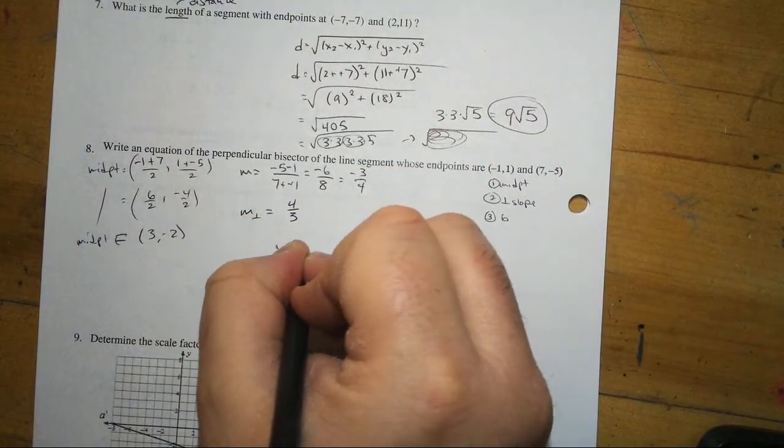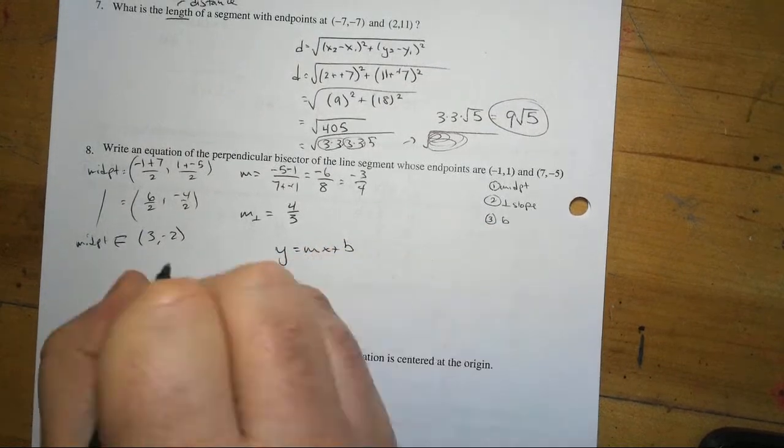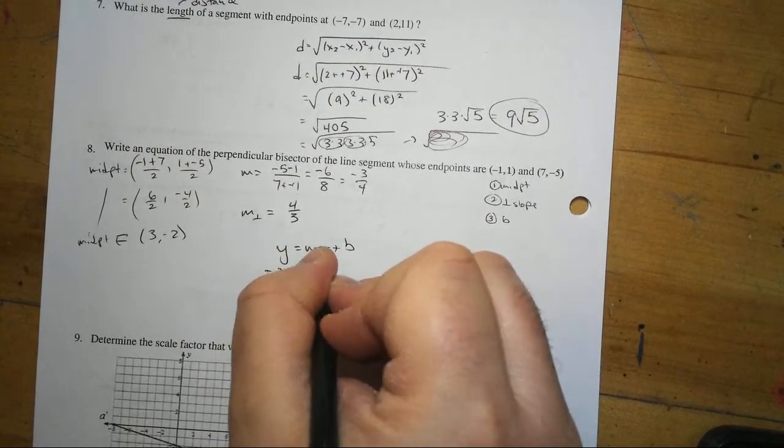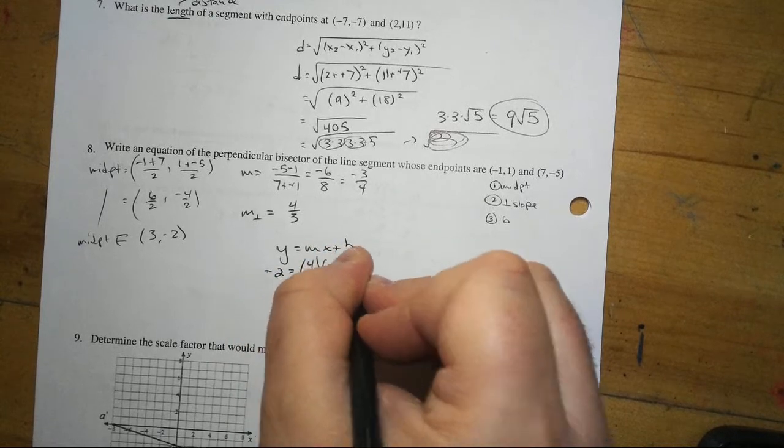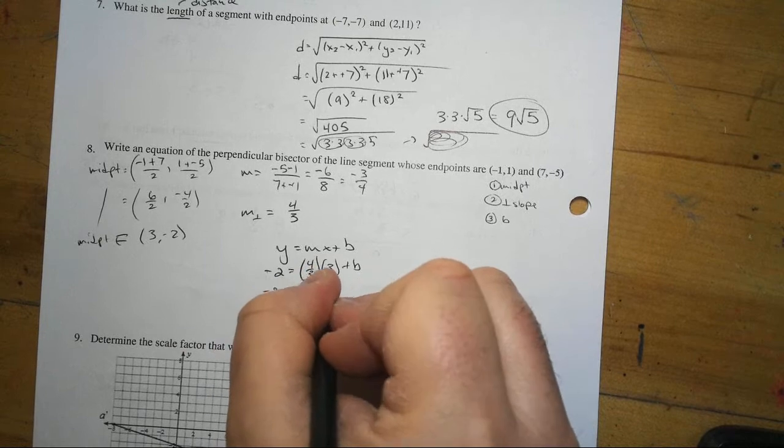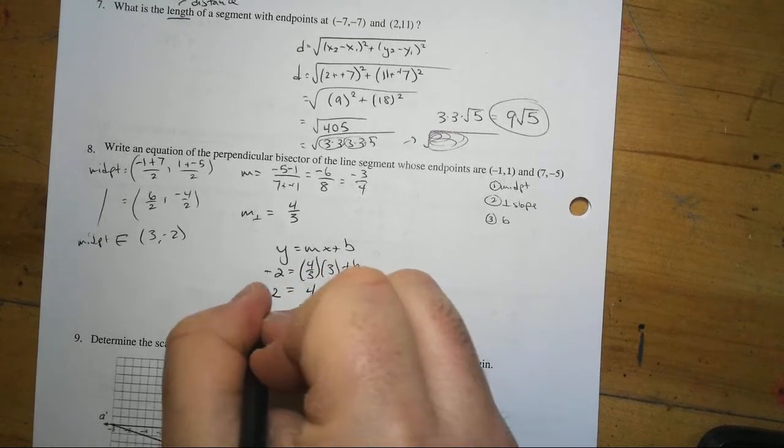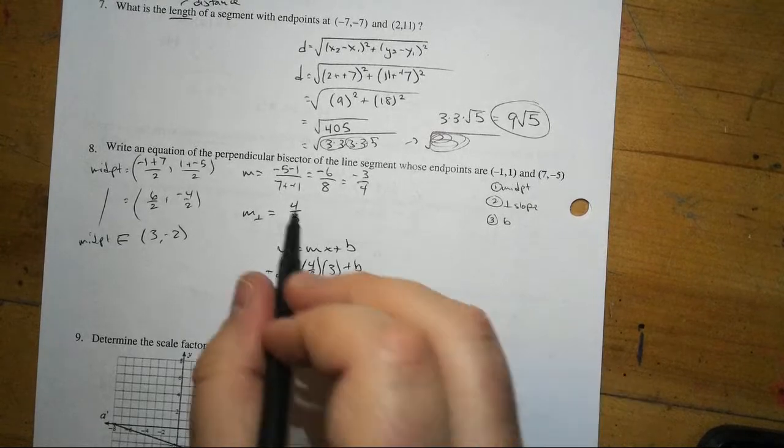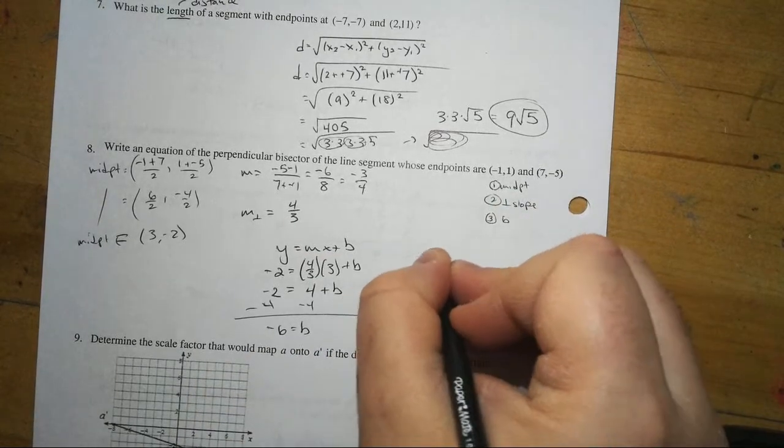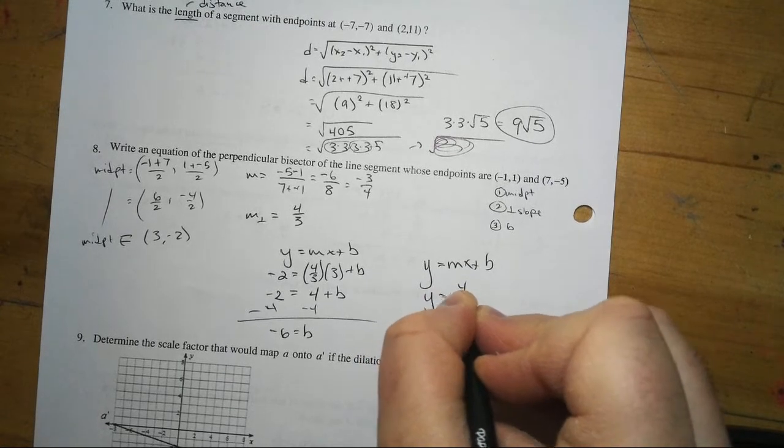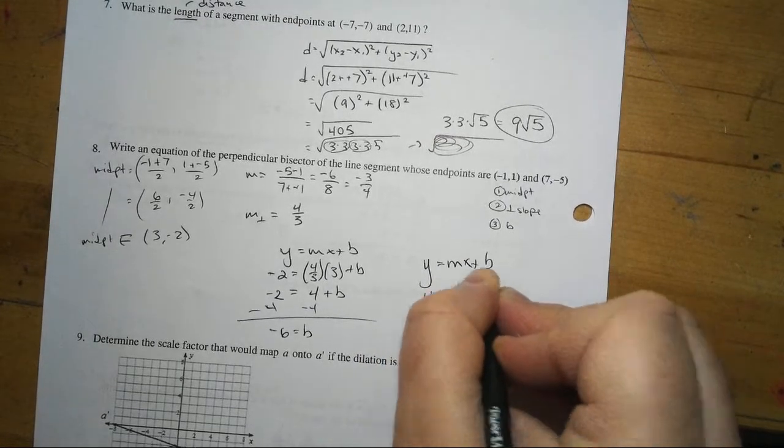And then we're just going to do our y equals mx plus b. We'll plug our midpoint in. Negative 2. Our slope, 4 thirds times 3 plus b. 4 thirds of 3. The 3's are going to cancel. We're just going to get 4 left here. Take away the 4 from both sides. And we're going to get negative 6 is equal to b. Slope. Y intercept. We plug it into this. And we get y is equal to 4 thirds x minus 6.